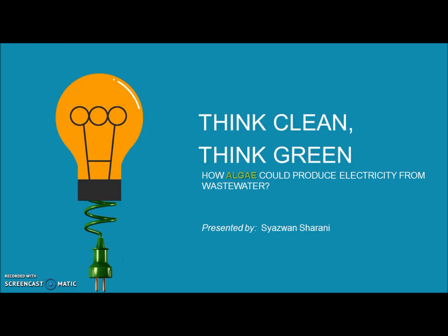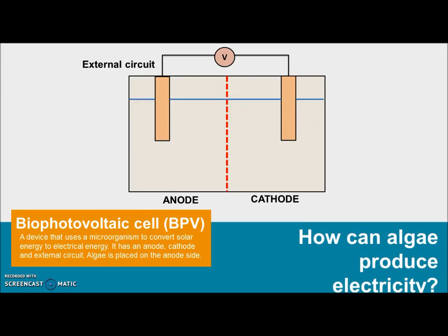You might wonder how algae can produce electricity. The solution is pretty simple. Algae can produce electricity through a device called a biophotovoltic cell, which is basically a device that uses a microorganism to convert solar energy to electrical energy. This device is also known as BPV.